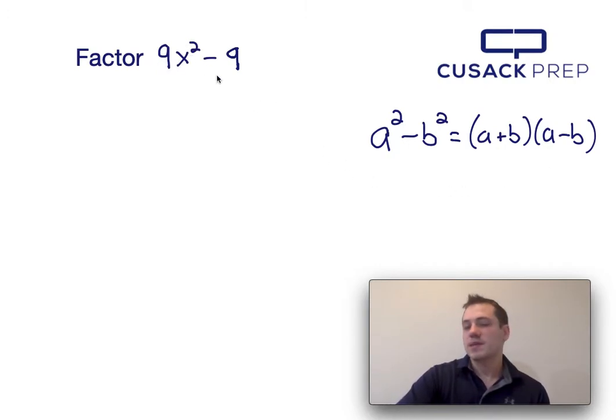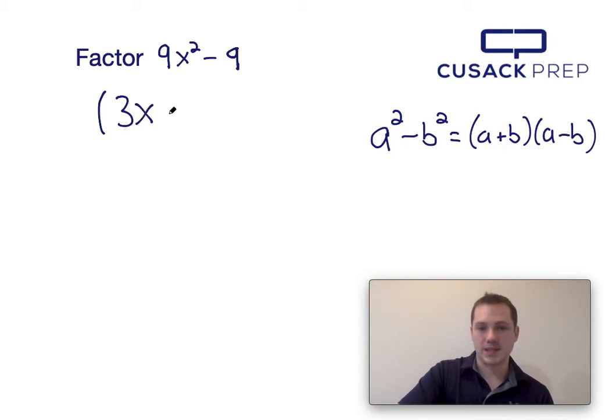Now, 9x squared is my first term, and 9 is my second term, so I could say that a squared is 9x squared, and b squared is 9. Taking the square root of both sides, I determine that a is 3x, and b is 3.